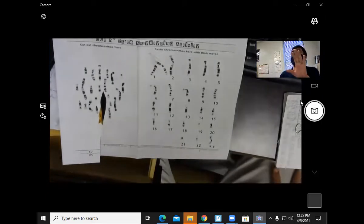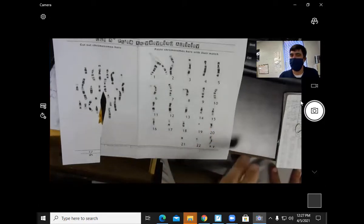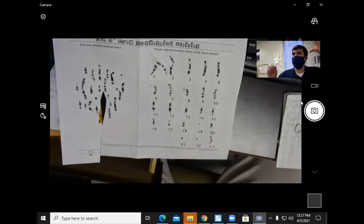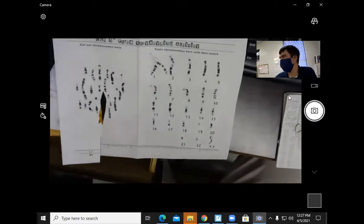The only one that will not be the same size is the last one, the sex chromosome. They will not be exactly the same size. The X will be bigger, and the Y will be smaller. They don't look at all the same.